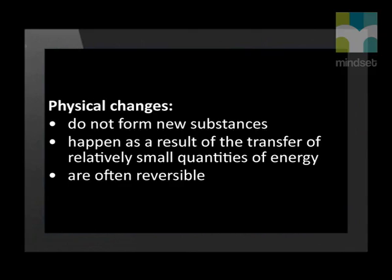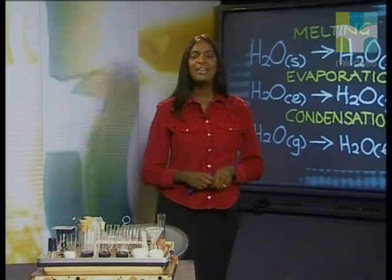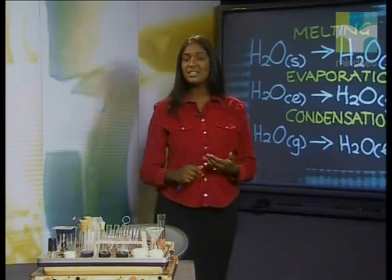Let's summarize what we have found out about physical changes, starting with our everyday observations. We call things that we observe macroscopic properties. Observations are things we notice with all of our senses, not just our eyes. We found that physical changes do not form new substances and happen as a result of the transfer of relatively small quantities of energy — we do not see flames or hear explosions. Physical changes are often reversible. On a microscopic level, during physical change, particles change the way they are arranged because the intermolecular forces between them change.